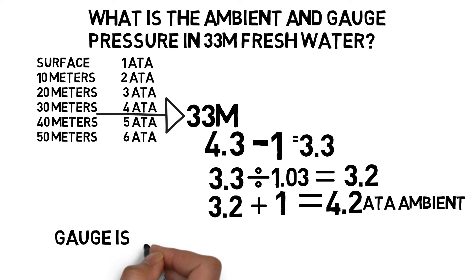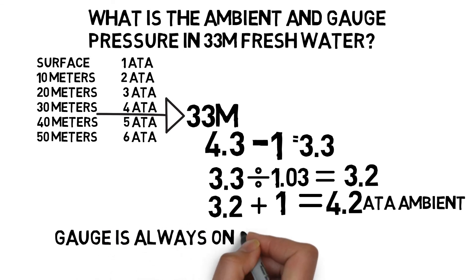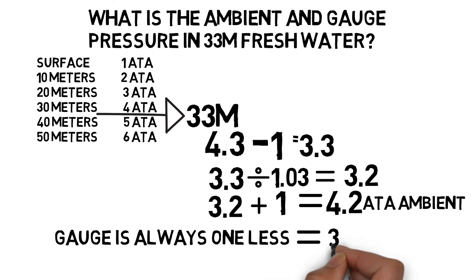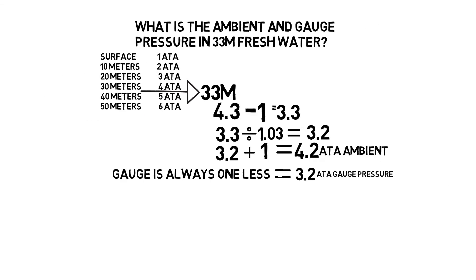Once we've calculated that, to calculate the gauge pressure at 33 meters of fresh water is easy. We just subtract one from that to give us 3.2 atmospheres gauge pressure in fresh water. So always build it up from your chart that you're familiar with, and it's easy.